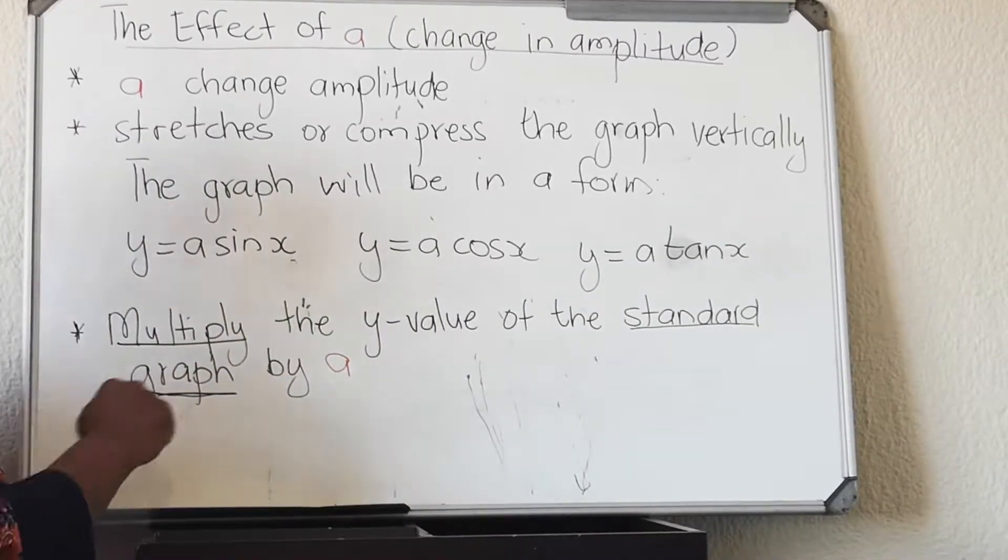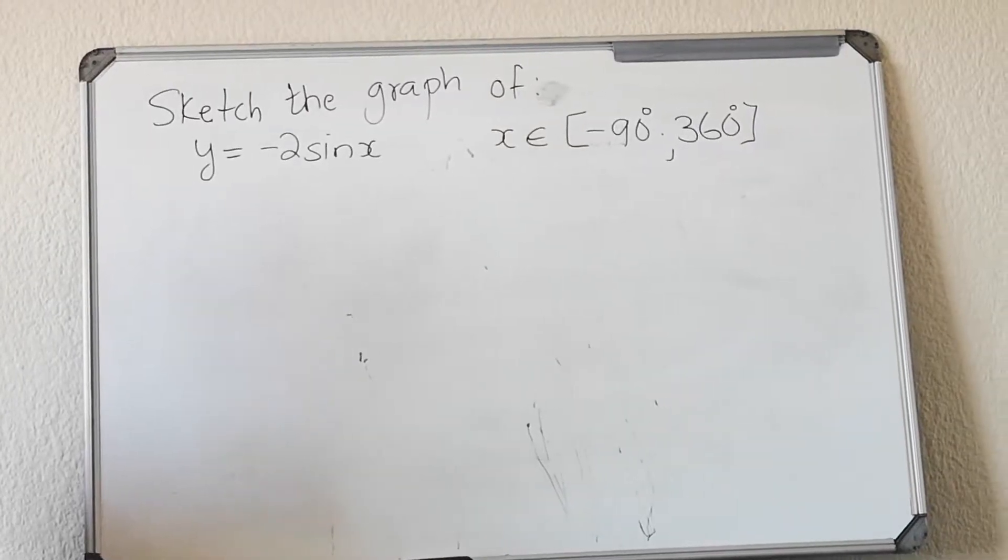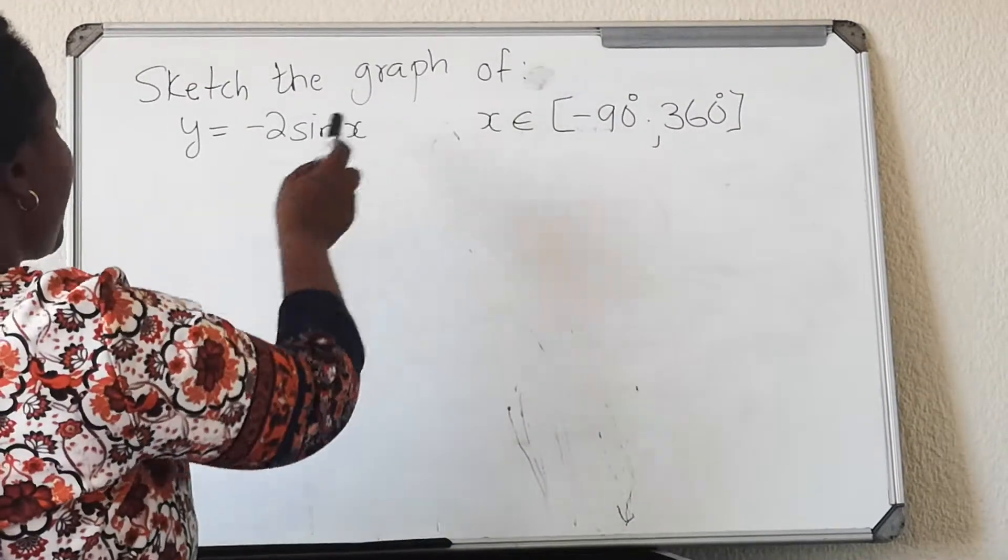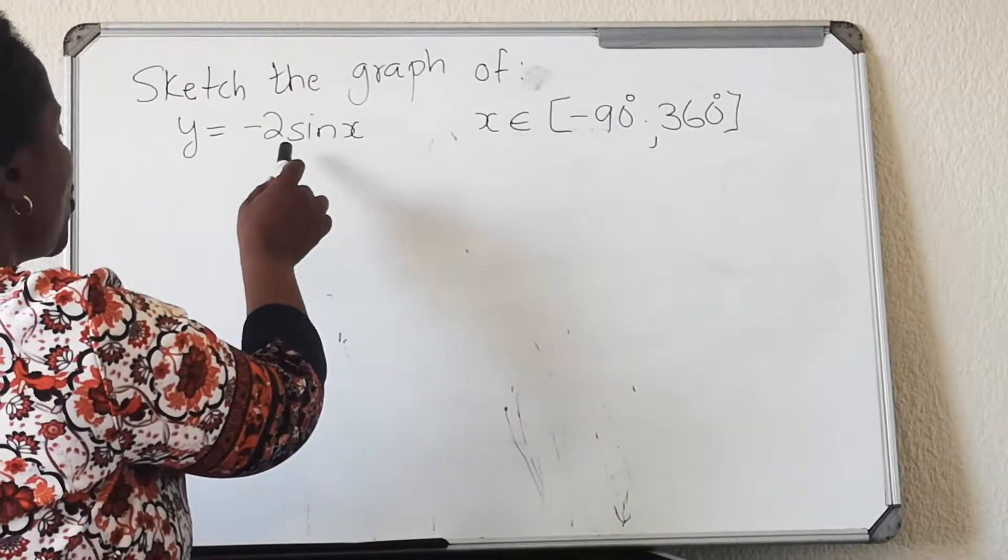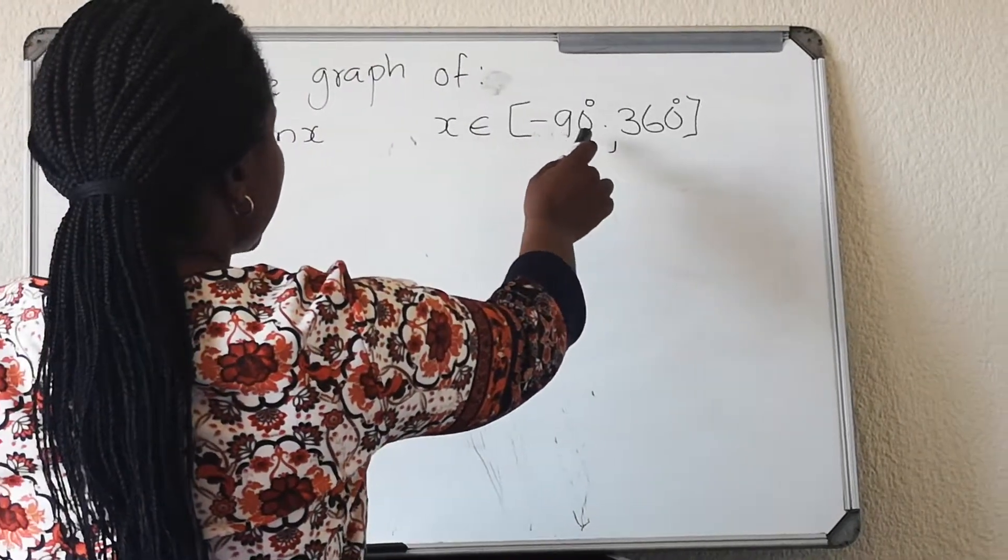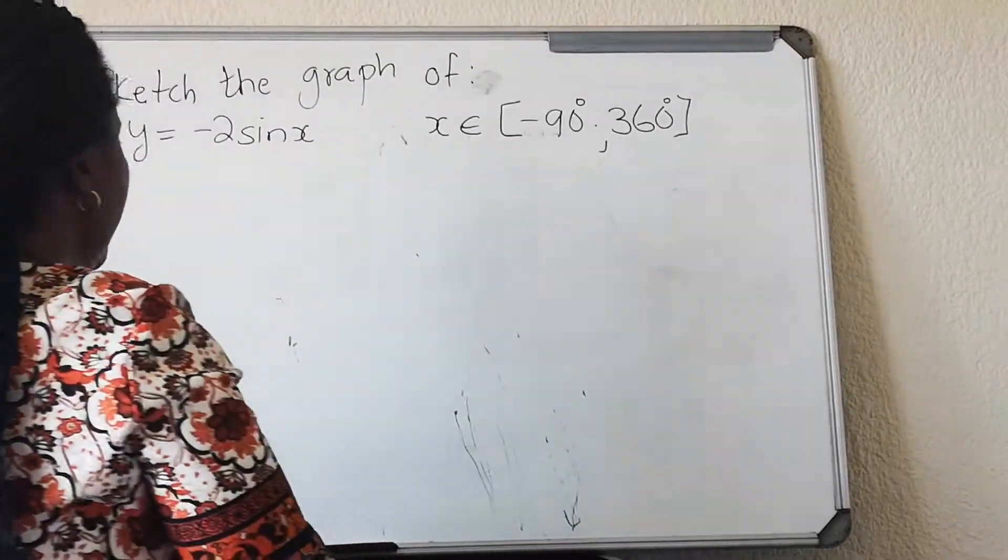Let us draw the graph. In the question paper, the question might be phrased like this: sketch the graph of y equals minus 2 sine x, and the restriction is x is an element of minus 90 and 360.